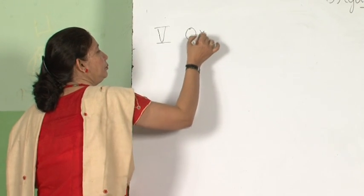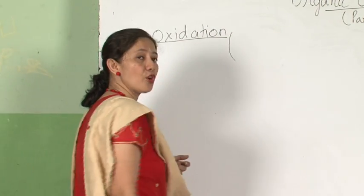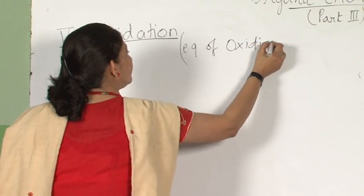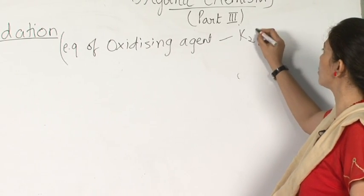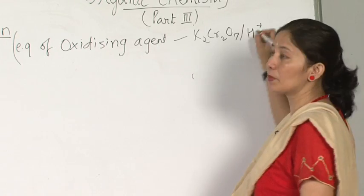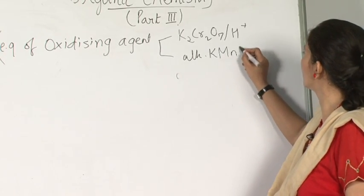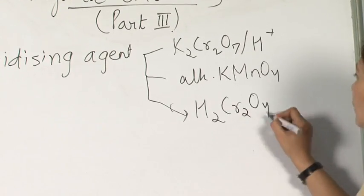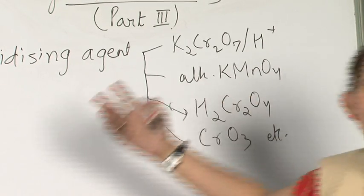I am going to the fifth type of reaction: oxidation reaction. I am giving some examples of oxidizing agents: acidified potassium dichromate — we will study this in the D-block elements — alkaline KMnO4 — also studied in D-block — chromic acid, and chromic oxide. These are some of the common oxidizing agents.